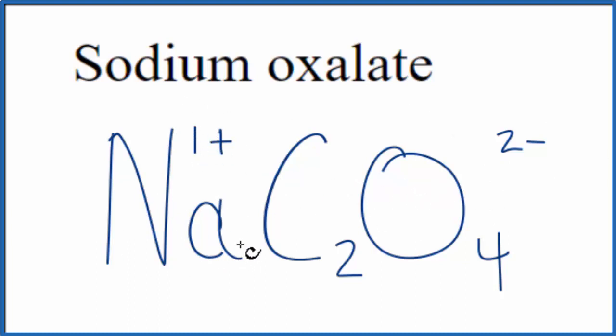Since we have this 1+ here, if we had 2 of these, 2 times 1+, that's 2+, that would balance out the 2-, our net charge would be 0. So this is the formula for sodium oxalate, Na2C2O4.